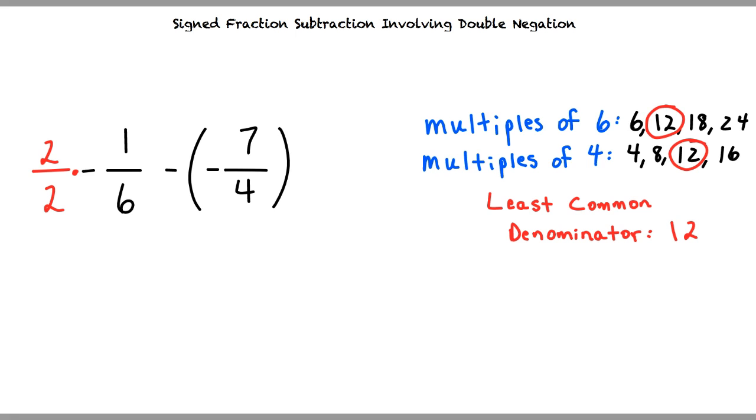2 over 2 times negative 1 over 6 is equal to negative 2 over 12. In the same way, we must also multiply the denominator of our second fraction to equal 12. The denominator of our second fraction is 4, so we must multiply by 3 over 3.